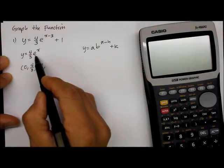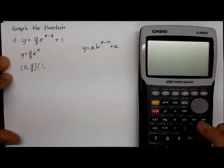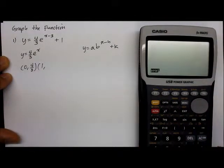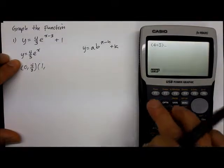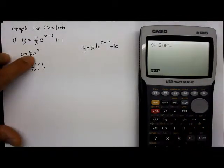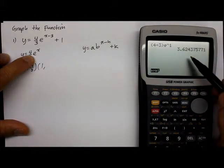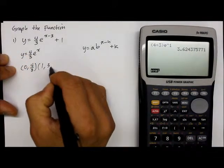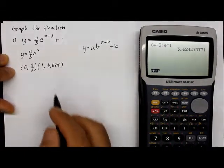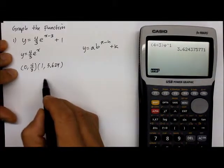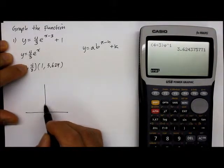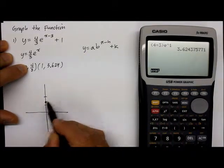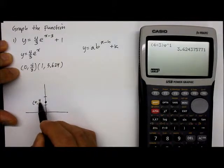Now if we let x equal one, back to the calculator. We turn it on and go: four divided by three times e raised to the first power. We execute and get 3.624.